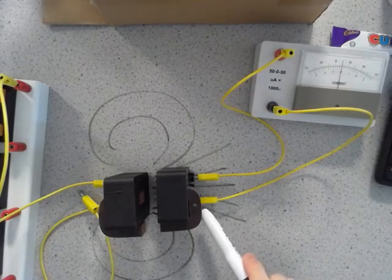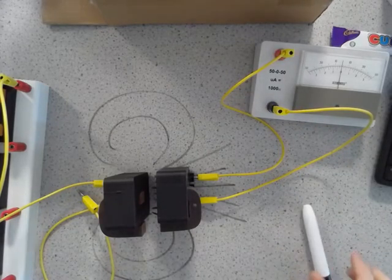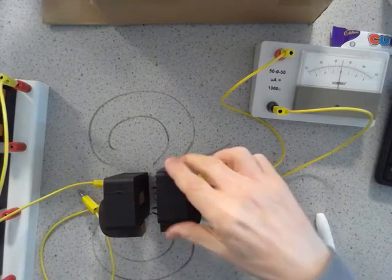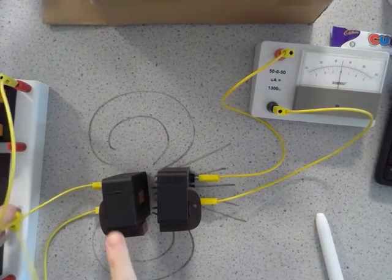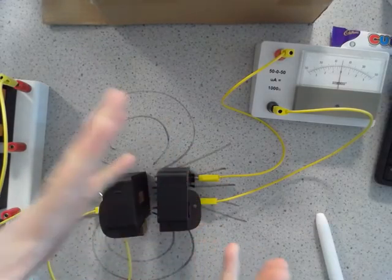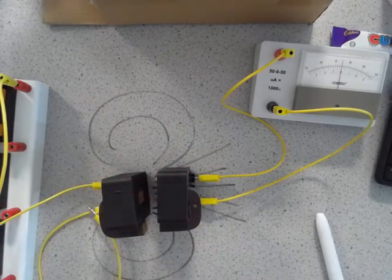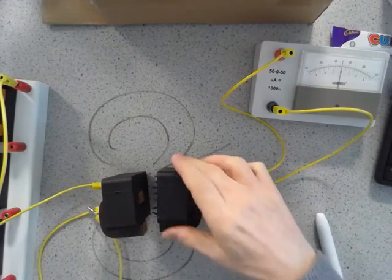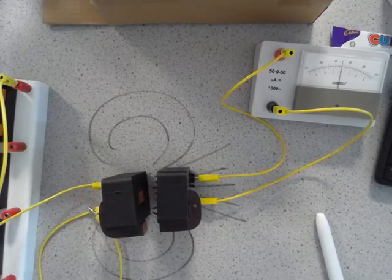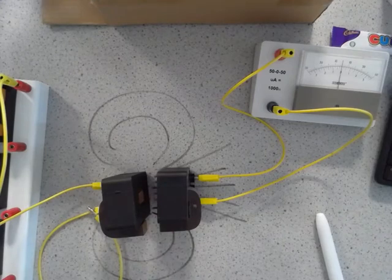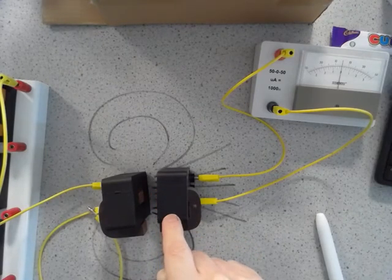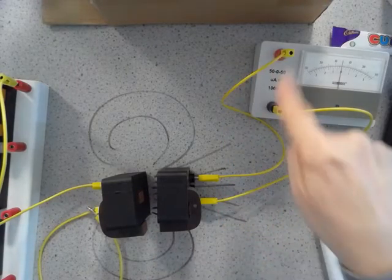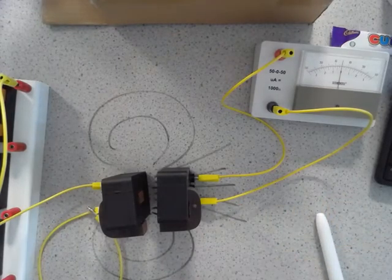The flux linking this coil changes, and when the flux linkage changes, that causes the EMF to be induced, and so we see the current flowing. We can explain this using the language of flux cutting as well, because we can say that when the current starts to flow in the first coil, the field is set up around the coil. You can think of it a little bit like opening an umbrella. The field opens up and the field lines are set up, and as the field is set up, so the field lines cut through the turns of the coil.